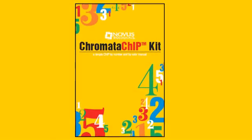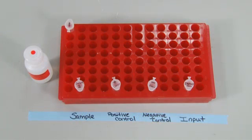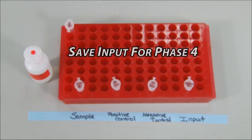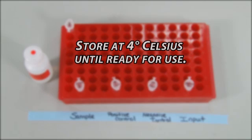If you are using the ChromatoChip kit, your kit includes a positive control antibody. Dilute one last sample and label this input. The sample will not go through the IP process and instead be saved for phase 4 of the protocol. Store this at 4 degrees Celsius until ready for use.